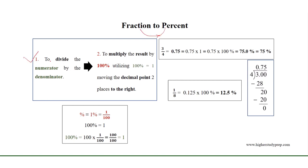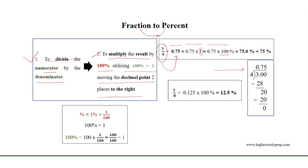Therefore, as we have learned, 1 equals 100%. If we want to obtain percent from a fraction, we need to first divide the numerator by the denominator. For example, if we consider 3 over 4, we can get that 3 over 4 equals 0.75 using long division. Then we multiply the result by 100%, since 100% equals 1. So 0.75 equals 0.75 times 100%, and moving the decimal point two places to the right gives 75%.